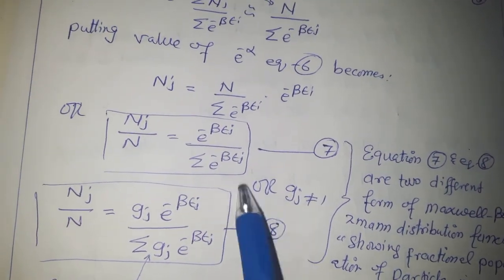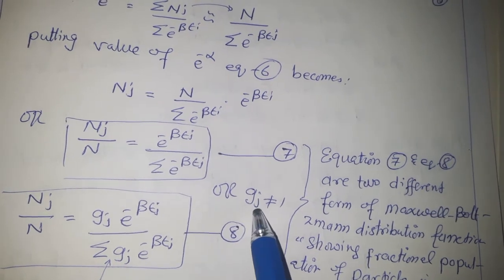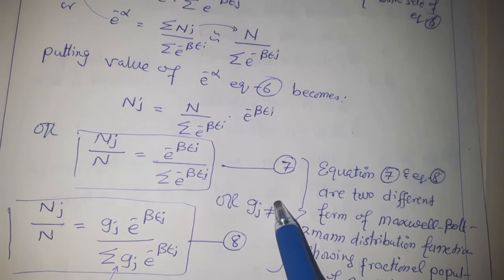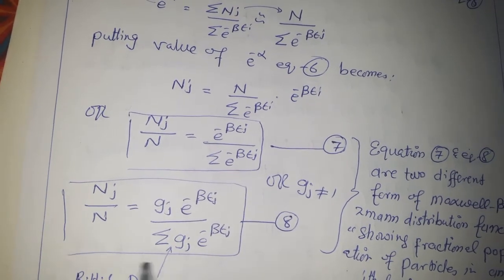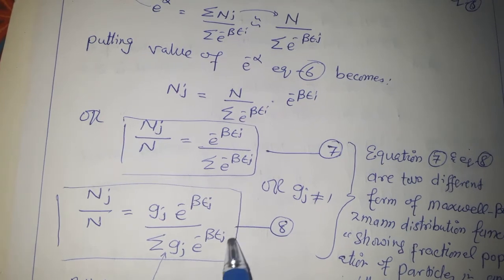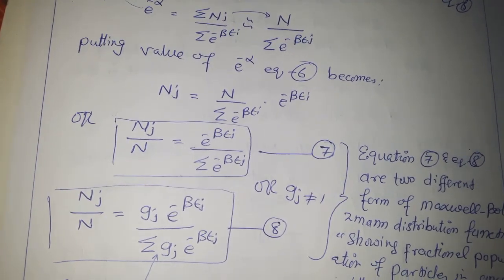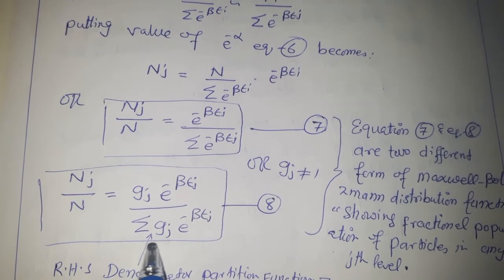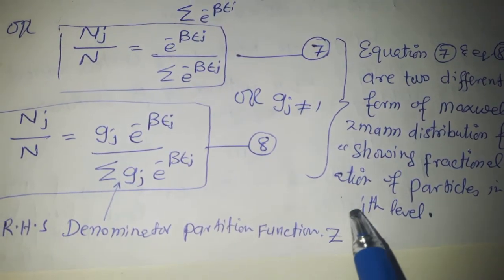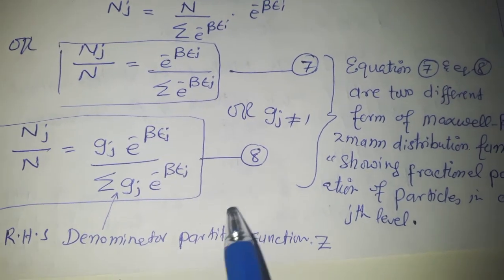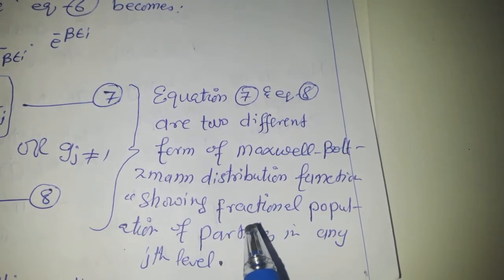Equation 7 can be extended: since we initially assumed only one energy state, we now put in the general value of gj for multiple energy levels, adding gj in numerator and denominator, to get the final Maxwell-Boltzmann distribution function — the population ratio or fractional number of particles in any jth level. The denominator of this equation is the partition function Z. Equations 7 and 8 are two different forms of the Maxwell-Boltzmann distribution function showing the fractional population of particles in any jth level.